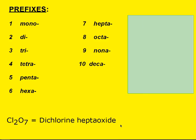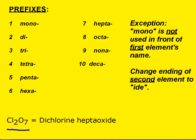For example, when we have two chlorines and seven oxygens: two chlorines — two was di — so dichlorine. You change the ending of the second element to -ide, but never the first. Seven is hepta, so hepta-oxide becomes heptoxide. We change the second one to -ide. Also, we do not use mono for the first element — only the second element will get the prefix mono.